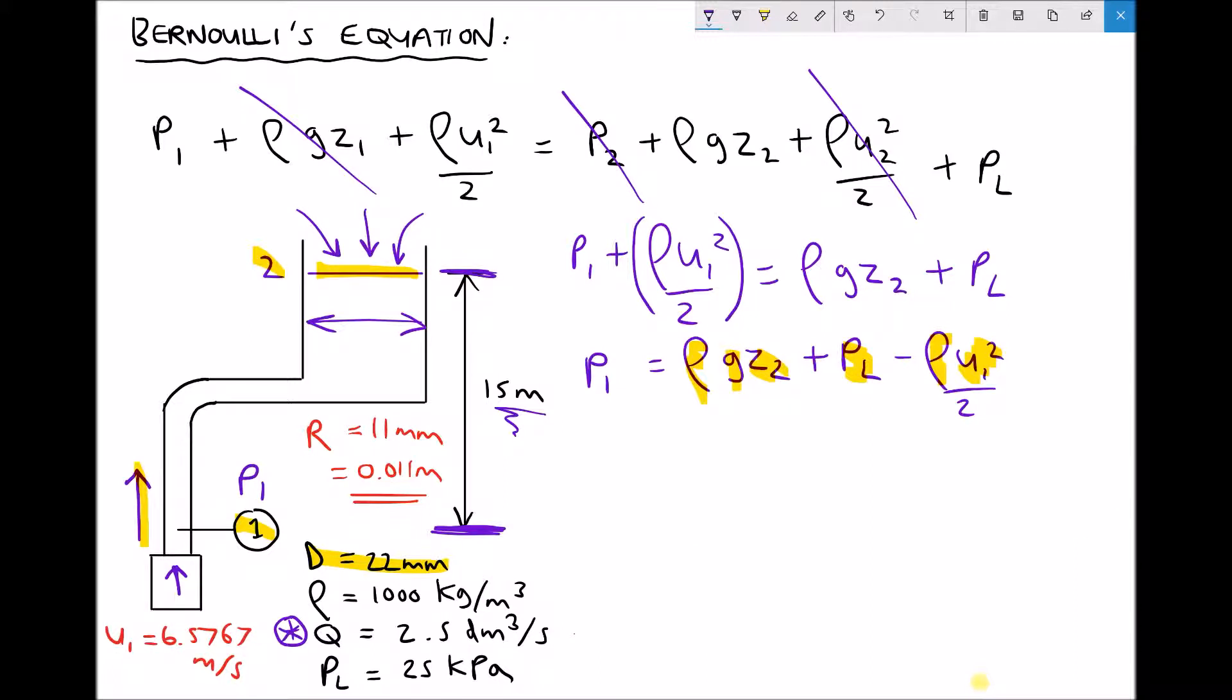Okay, so plugging our values into the Bernoulli's equation, we have p1 equals density 1000 times gravity 9.81 times elevation at position two, 15 metres. To that we need to add the pressure loss, which is 25 kilopascals, take care here because kilo is 1000, minus density 1000 times velocity squared 6.5767. And this is why I used plenty of decimal places on that velocity, divided by two.